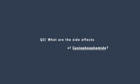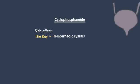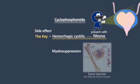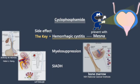What are the side effects of cyclophosphamide? The major side effect is hemorrhagic cystitis, which mesna effectively prevents. Other notable side effects are bone marrow suppression and SIADH.